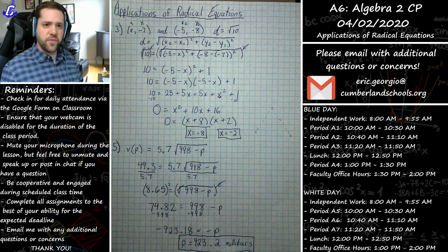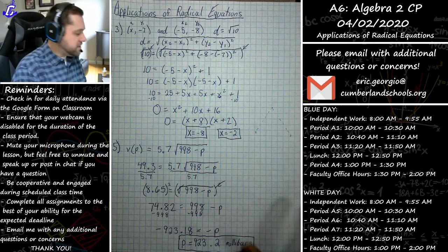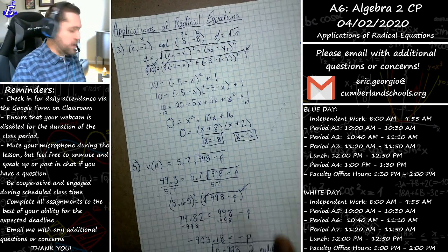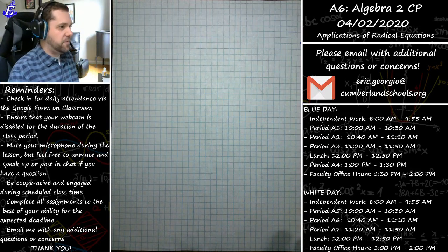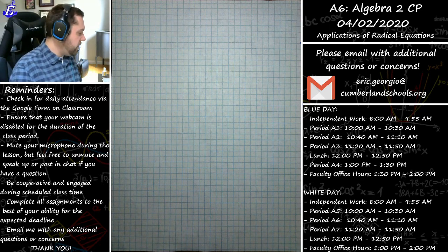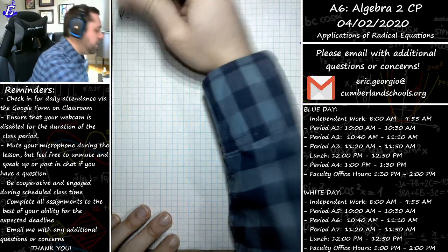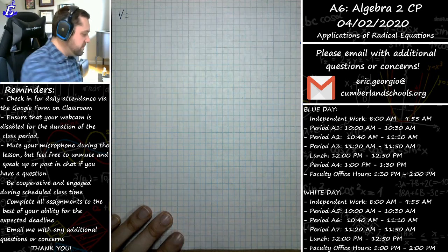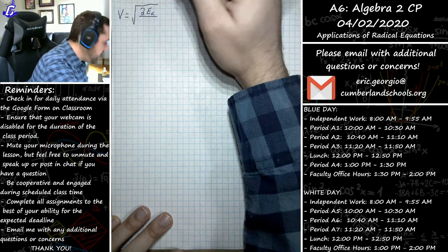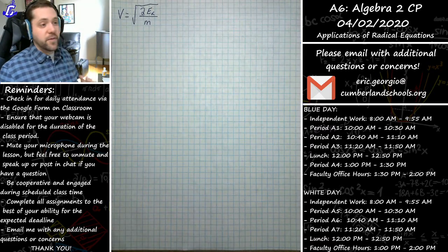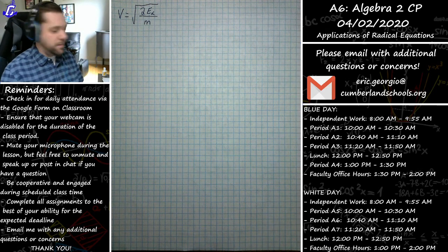There are all sorts of formulas — some rooted in math courses like geometry, some from physics — but they all use radicals and fall under applications of radical equations. Here's a physics one: the velocity of an object equals the square root of two times its kinetic energy (Eₖ) over its mass. That formula relates kinetic energy, mass, and velocity.